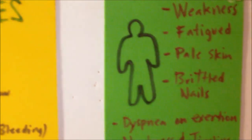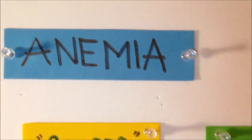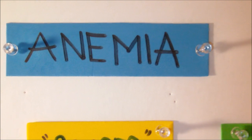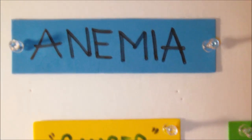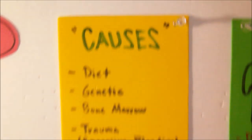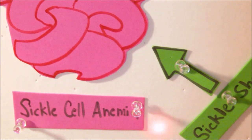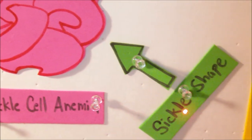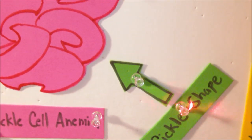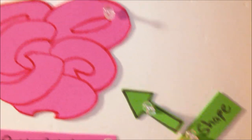Keeping in mind that anemia is not a disease but a disorder, there are different types of anemia. First, let's focus on sickle cell anemia. Sickle cell anemia is a genetic inherited disease — it is autosomal recessive, which means that each parent needs to have the sickle cell trait for the offspring to have a chance of having sickle cell anemia.